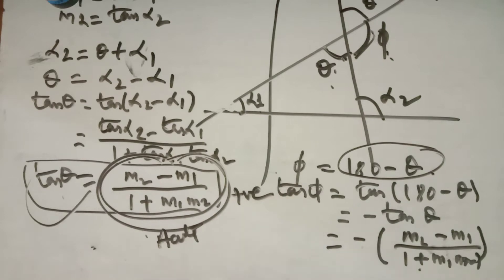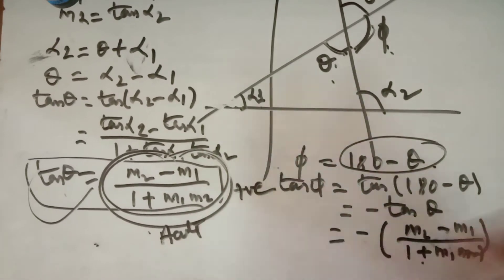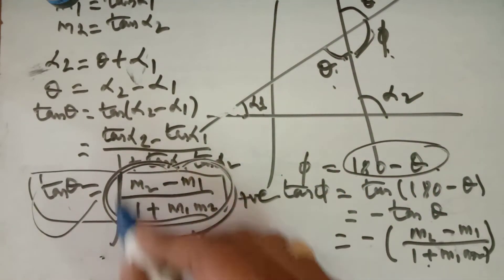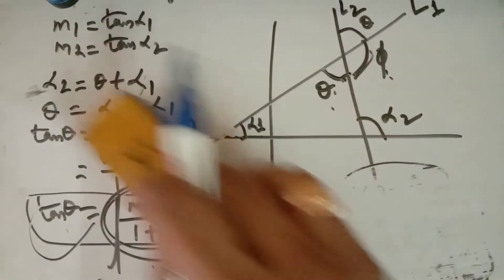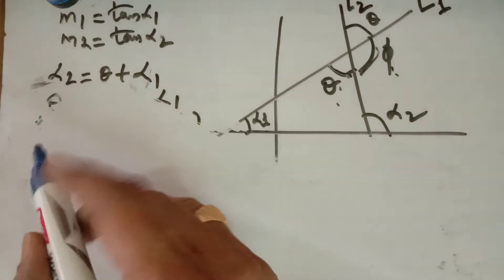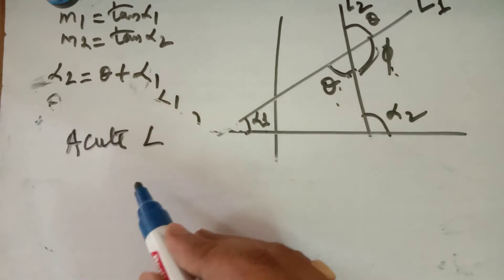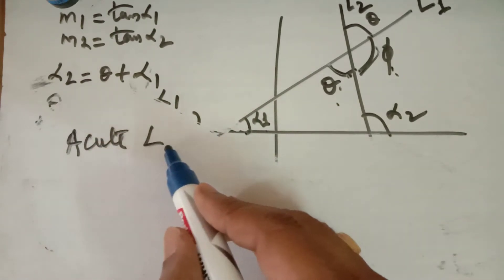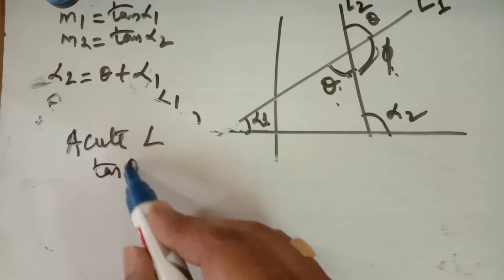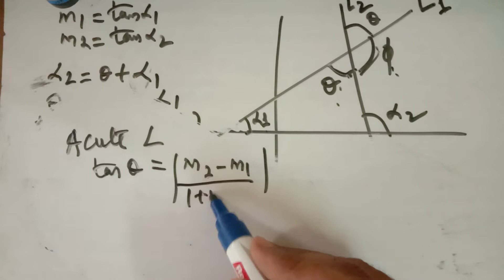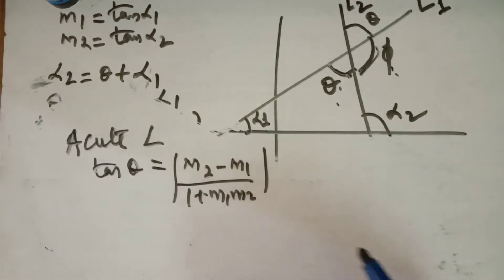Since we always try to find the acute angle between the two lines, the formula for the acute angle theta is: tan(theta) = |(M2 - M1) / (1 + M1·M2)|, using the modulus. This is the acute angle between the two lines.